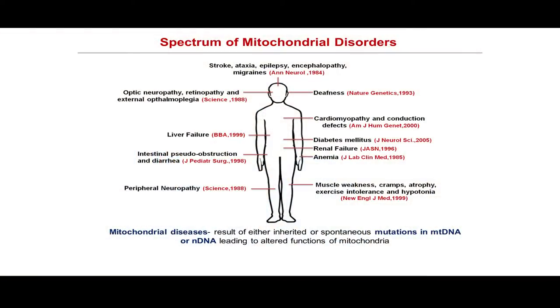The mitochondrial genome is maternally inherited, with few exceptions. When there is a mutation in the mitochondrial genome or mitochondrial dysfunction, a broad spectrum of disorders can result — ranging from common manifestations such as anemia, diabetes, and renal failure, to more complex conditions such as microcephaly, optic neuropathy, retinopathy, stroke, and ataxia. Mitochondrial disorders are defined as resulting from either inherited or spontaneous mutations in nuclear DNA or mitochondrial DNA, leading to altered mitochondrial function. This wide range of clinical manifestations is precisely what makes these disorders so difficult to diagnose.